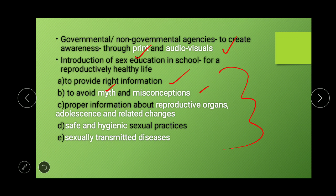School sex education provides proper information about reproductive organs and changes during adolescence — the age of puberty — including physical, mental, and emotional changes associated with reproduction. Safe and hygienic sexual practices and knowledge about sexually transmitted diseases — how they are transmitted — should all be learned by students from school education itself.